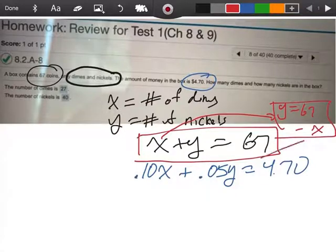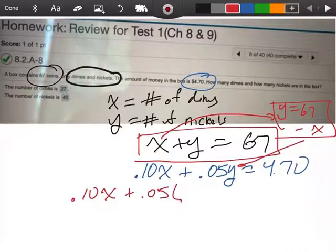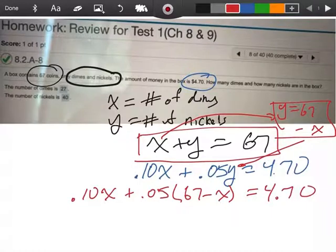Now I'm going to take this value of y, and I'm going to plug it in right here. So I'm going to end up with 0.10x plus 0.05 times 67 minus x equals 4.70.